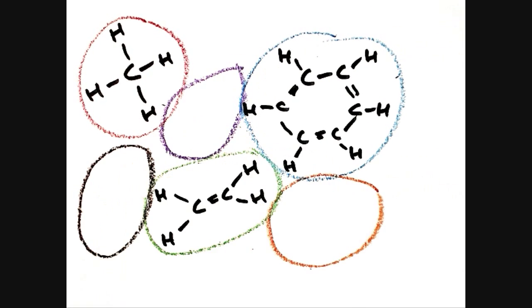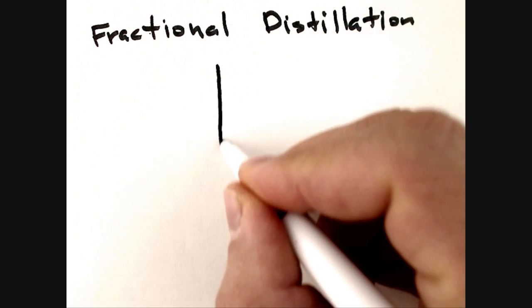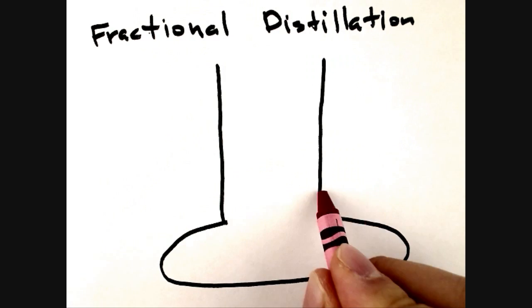The process which is used to separate each type of hydrocarbon is called fractional distillation. The basic idea is that each type of hydrocarbon has a different boiling point.